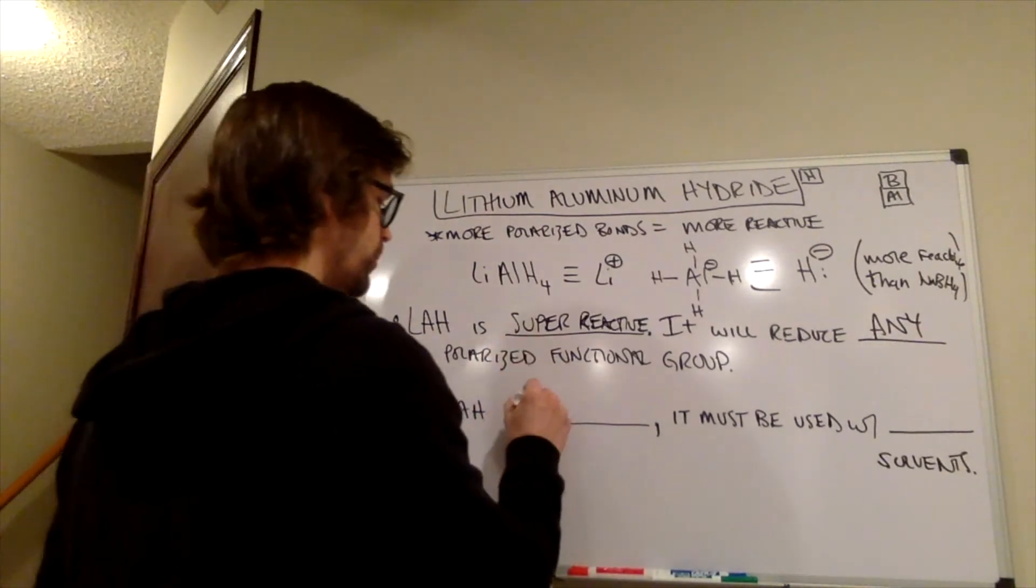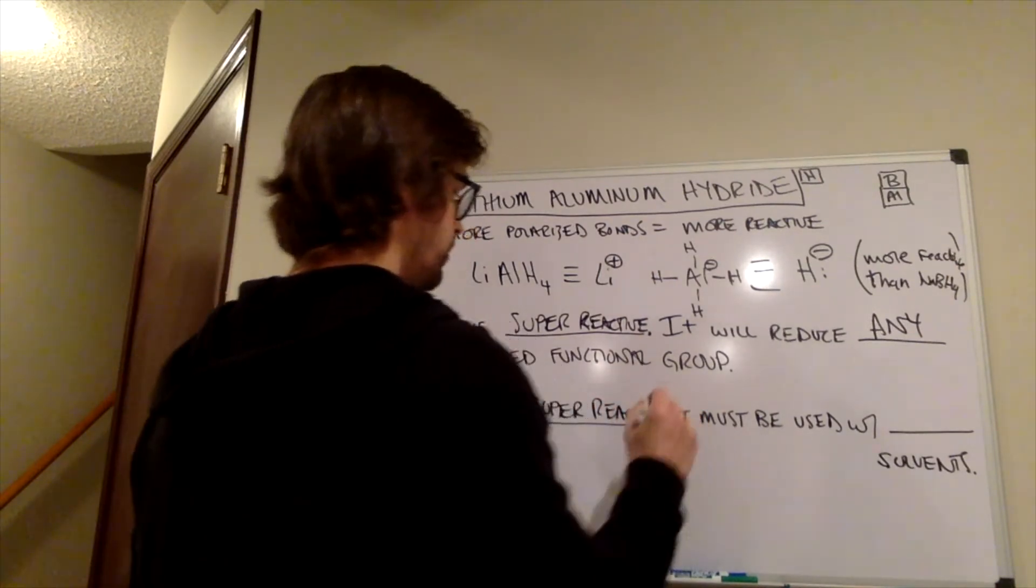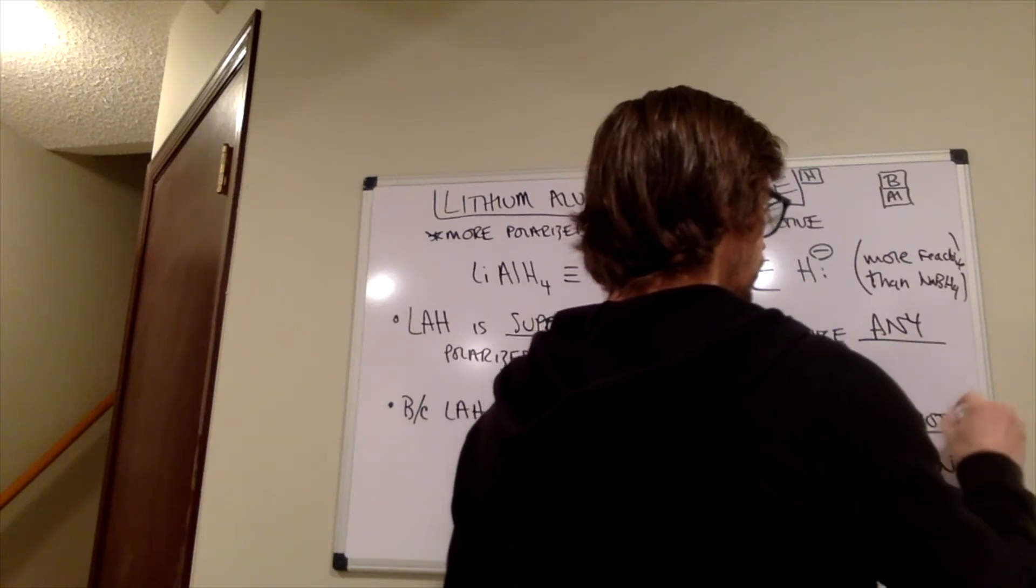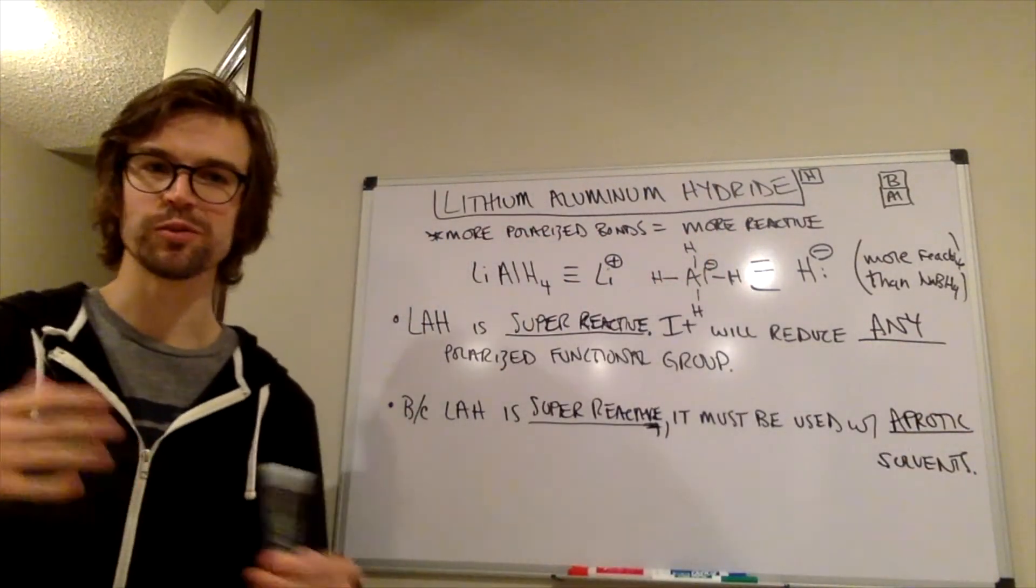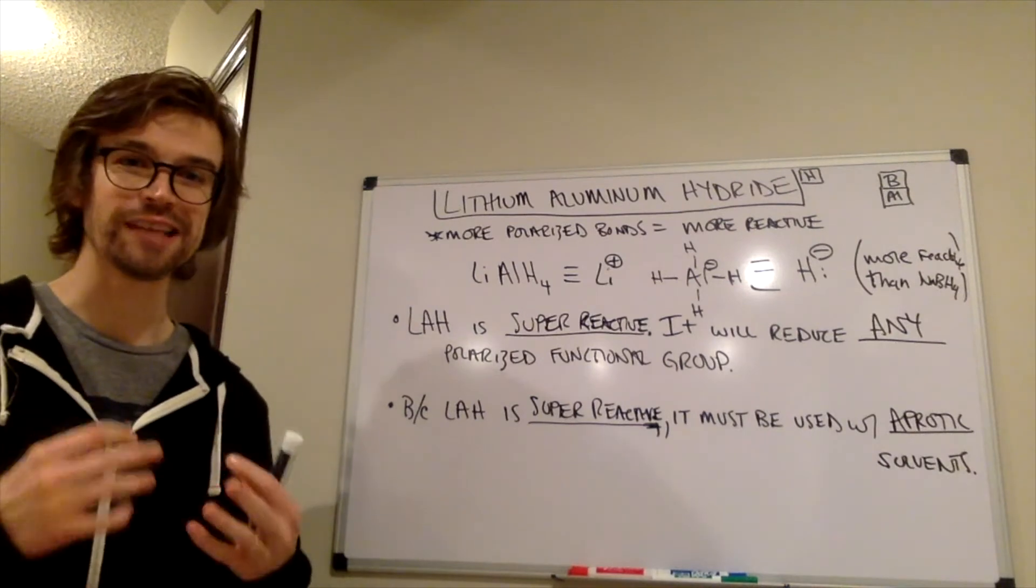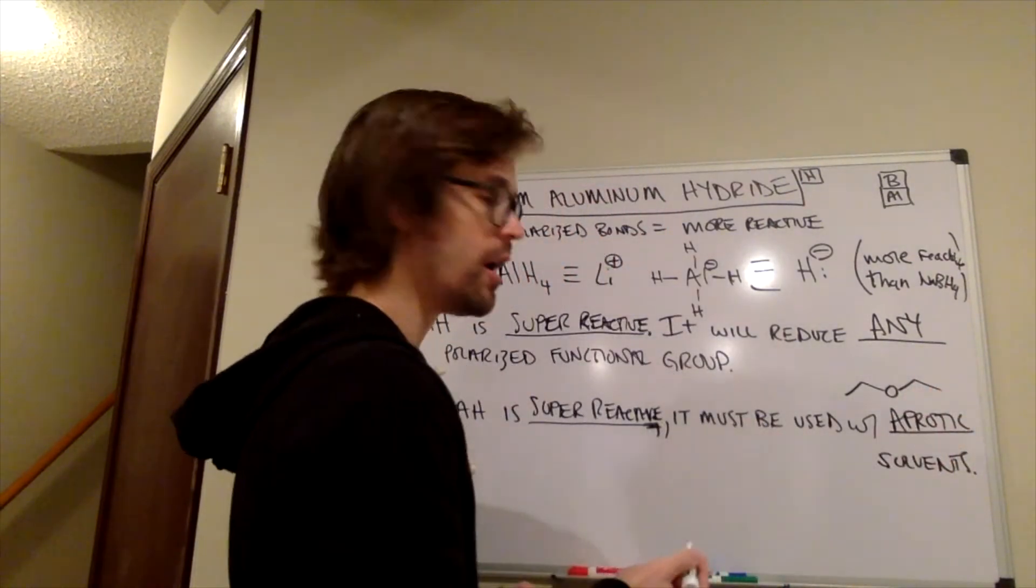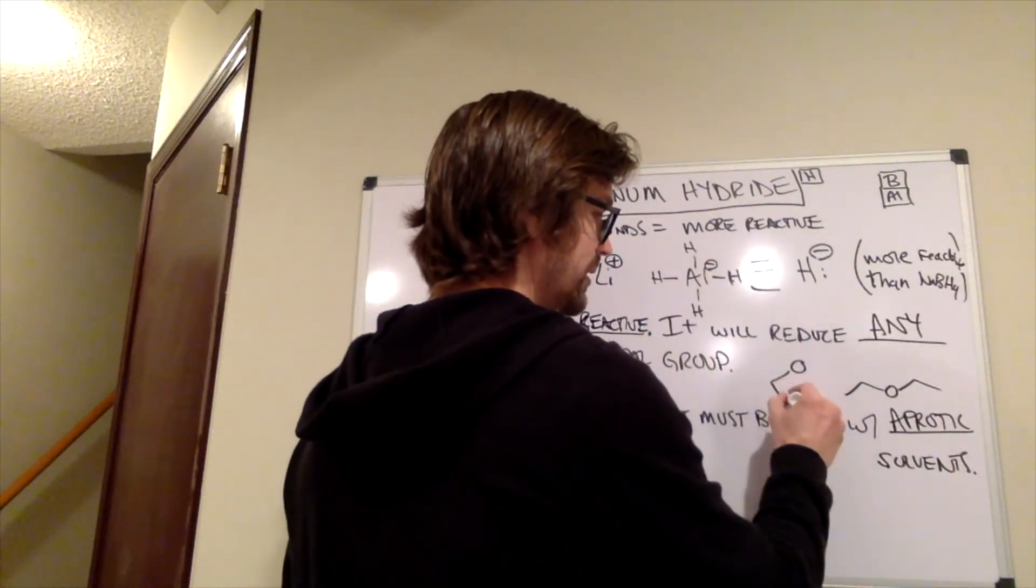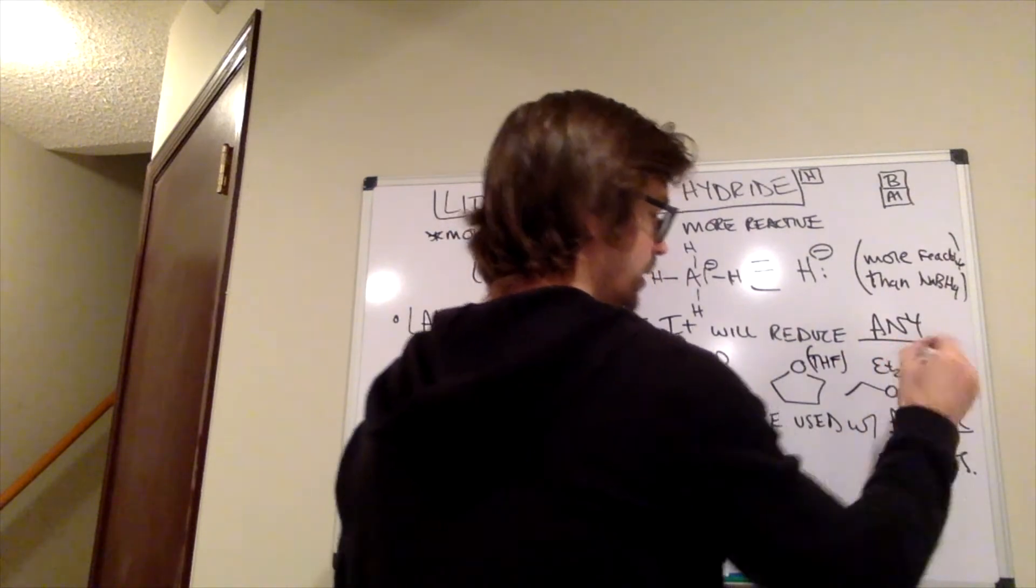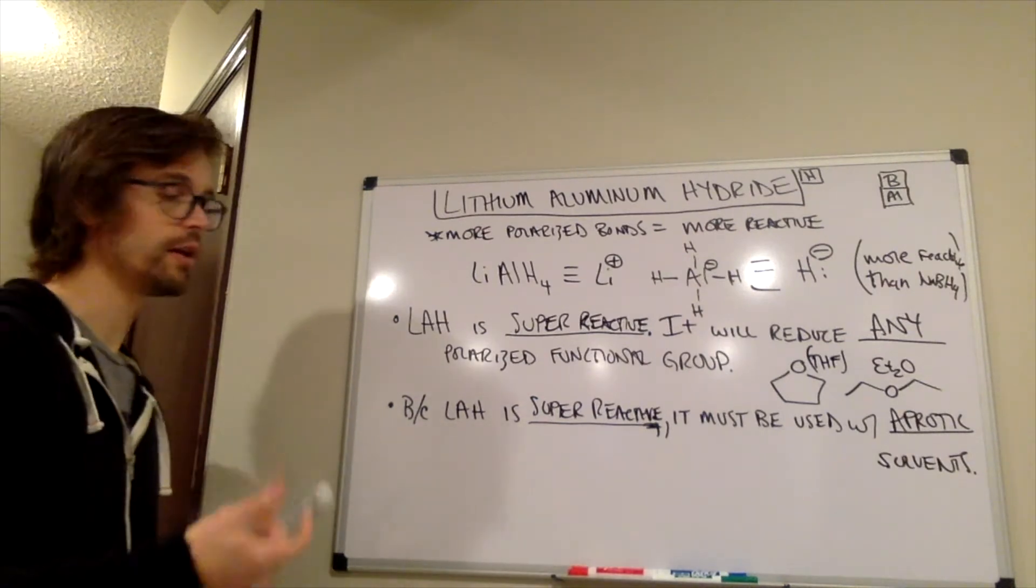Because lithium aluminum hydride is super reactive, because it's super reactive, it must be used with aprotic solvents. So aprotic solvents, what does that mean? Solvents that are lacking in acidic proton. Methanol, ethanol, water, all of those things have a somewhat acidic proton. What do we have to use here? We have to use either some type of diethyl ether is one thing that's commonly used. Another thing that's commonly used is THF, which is a cyclic ether. It's called tetrahydrofuran. This is THF. This is diethyl ether. So those solvents must be used with lithium aluminum hydride.